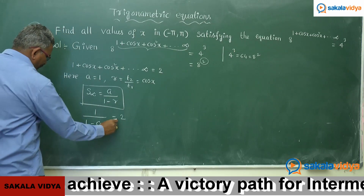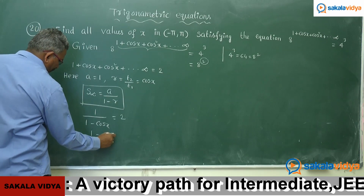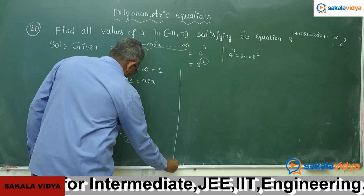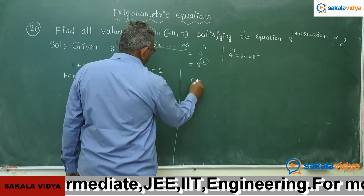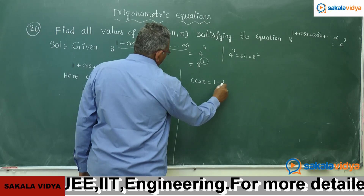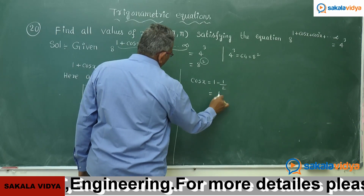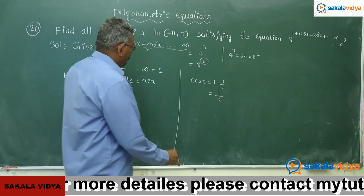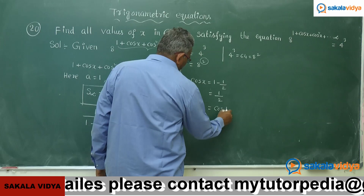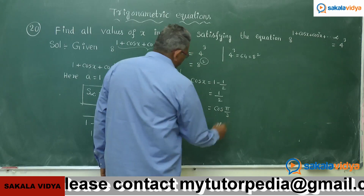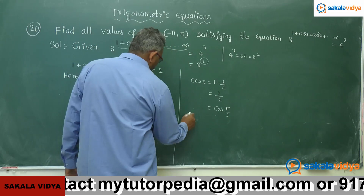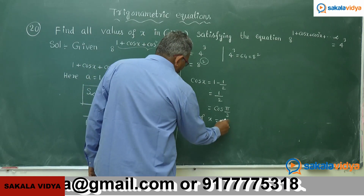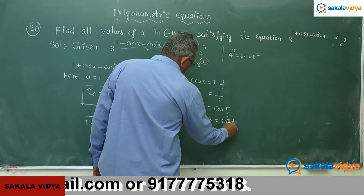From 1 divided by 1 minus cos x equals 2, we get 1 minus cos x equals 1 by 2, so cos x equals 1 minus 1 by 2, which gives cos x equals 1 by 2. This corresponds to cos 60 degrees, that is pi by 3. The general solution is x equals 2n pi plus or minus pi by 3.